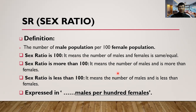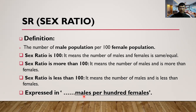If sex ratio is more than 100, the number of males is greater than females. If sex ratio is less than 100, the number of males is less than females. Sex ratio is expressed as males per 100 females. For example, a sex ratio of 101 means 101 males for every 100 females — males outnumber females. A sex ratio of 99 means 99 males per 100 females — females outnumber males.